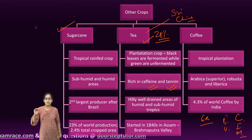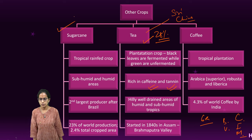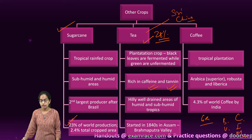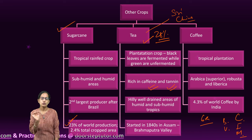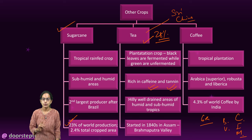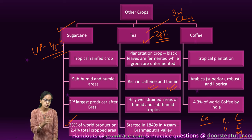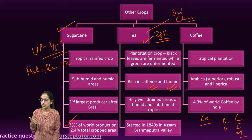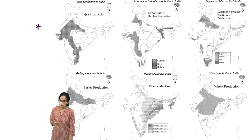Sugarcane is a tropical rain-fed crop grown in humid and sub-humid areas, both in the north and south of India. India is the second largest producer of sugarcane after Brazil, contributing 23% of world production from just 2% of total cropped area. It is a labor-intensive crop. Uttar Pradesh alone produces two-fifths of India's total sugarcane. Southern states like Maharashtra, Karnataka, and Tamil Nadu also have significant production, with higher sucrose content in the south compared to the north.